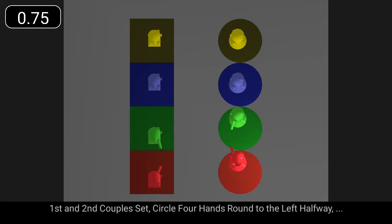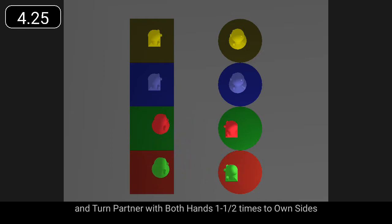First and second couples set, circle four hands round to the left halfway, and turn partner with both hands one and a half times to own sides.